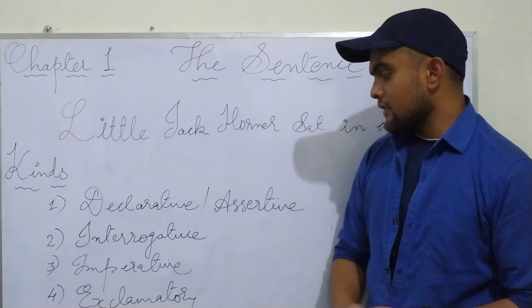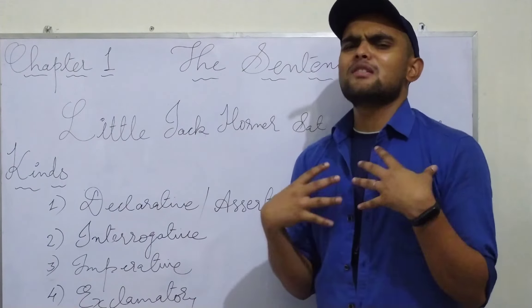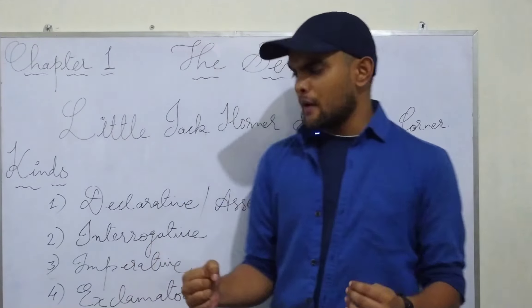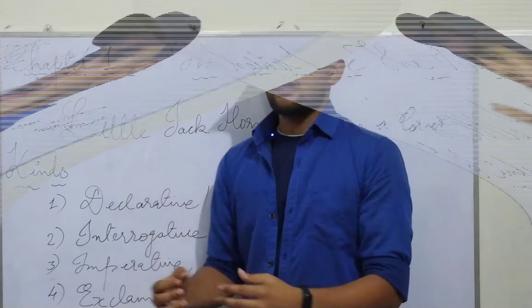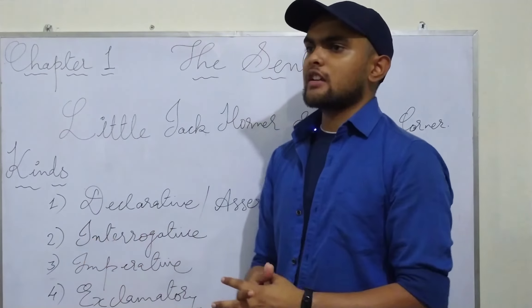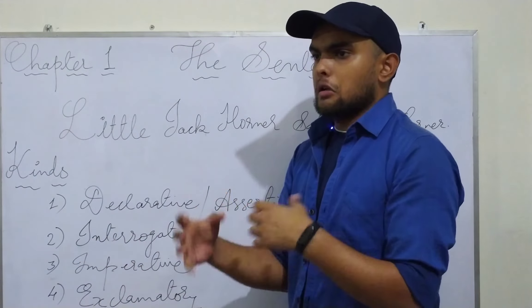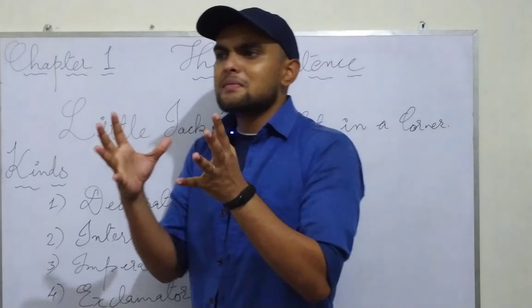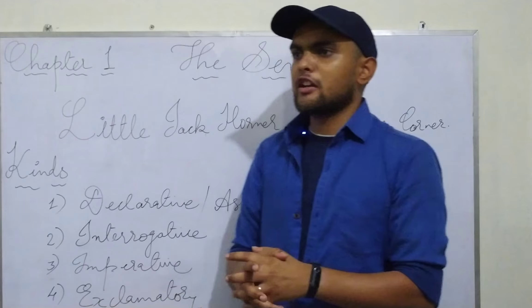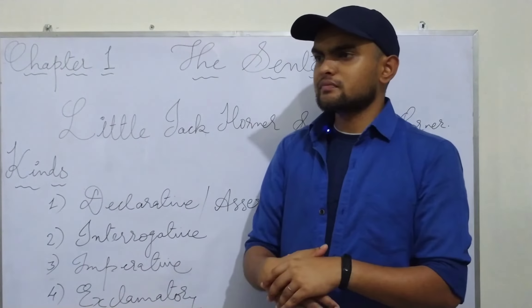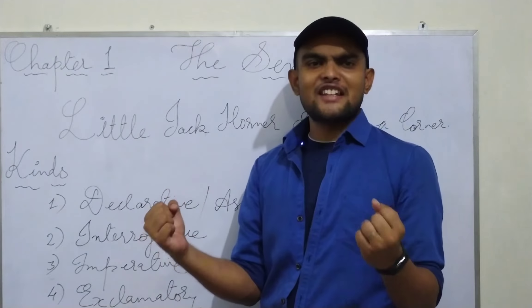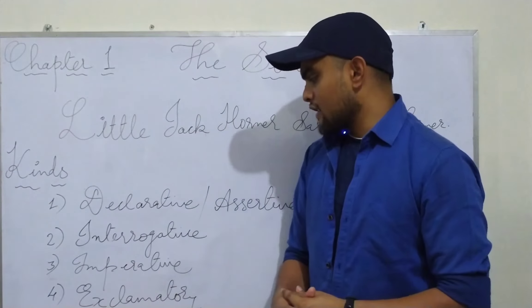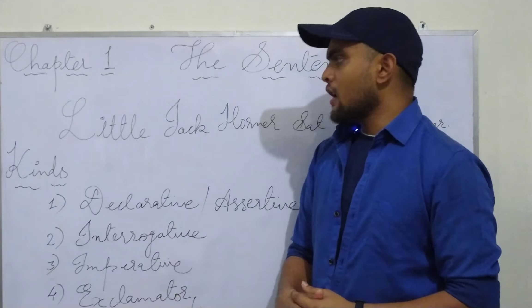And exclamatory — when we have a strong feeling. When we have strong anger — 'God,' 'good heavens' — we use that type of words. And WH exclamations like 'How romantic the night is!' — that is another type of exclamatory sentence we use. So that's all about the kinds of sentences.